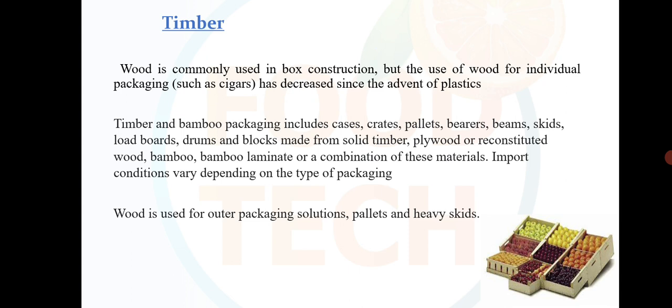Timber: wood is commonly used in box construction, but the use of wood for individual packaging such as cigars has decreased since the advent of plastics. Timber and bamboo packaging includes cases, crates, pallets, bearers, beams, skids, load boards, drums and blocks made from solid timber, plywood or reconstituted wood, bamboo, bamboo laminate or a combination of these materials.